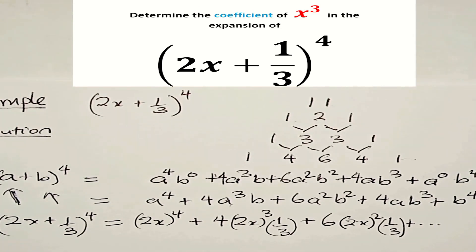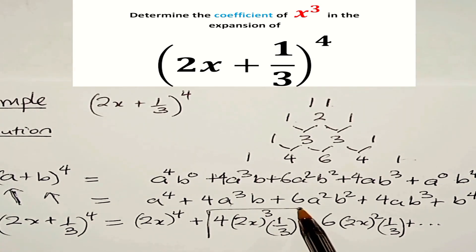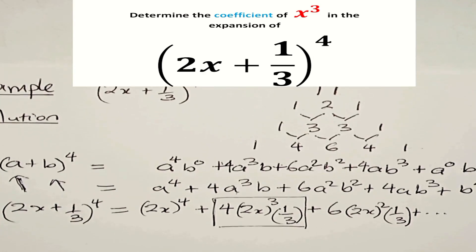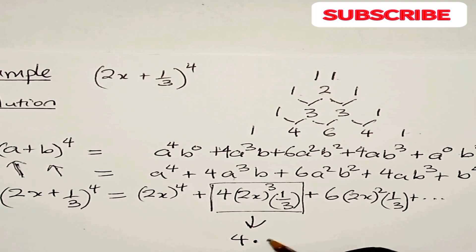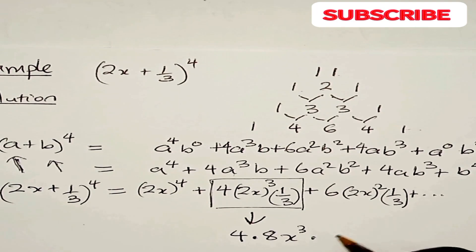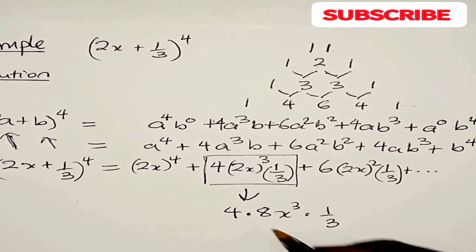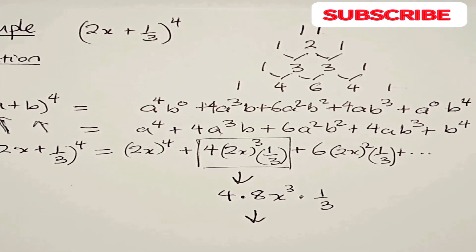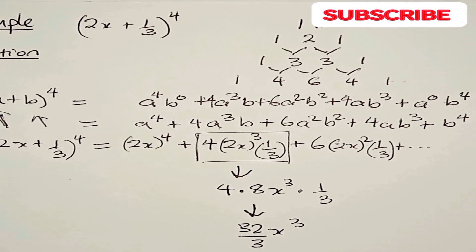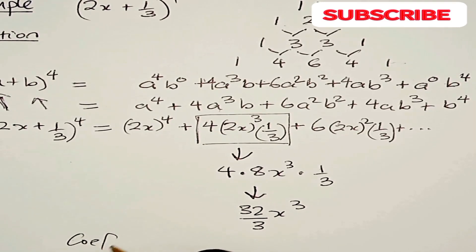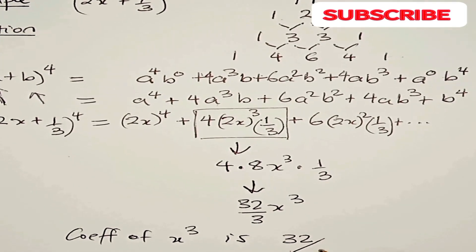We were asked to find the coefficient of x to the power of 3. We find that coefficient on the term with 2x to the power of 3. Simplifying: 4 times 2 to the power of 3 is 4 times 8, which is 32. So that term is 32 over 3 times x to the power of 3. Therefore, the coefficient of x to the power of 3 is 32 over 3.